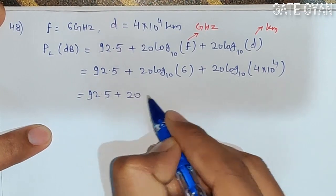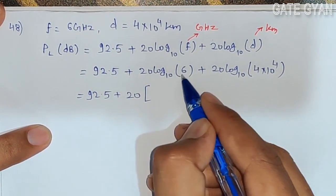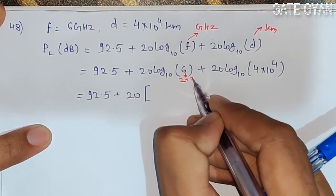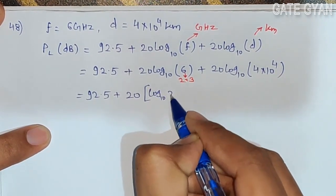You will see that 20log₁₀(6) can be written as log₁₀(2×3). You need to write 6 as 2×3, so you can write it as log₁₀(2) + log₁₀(3).